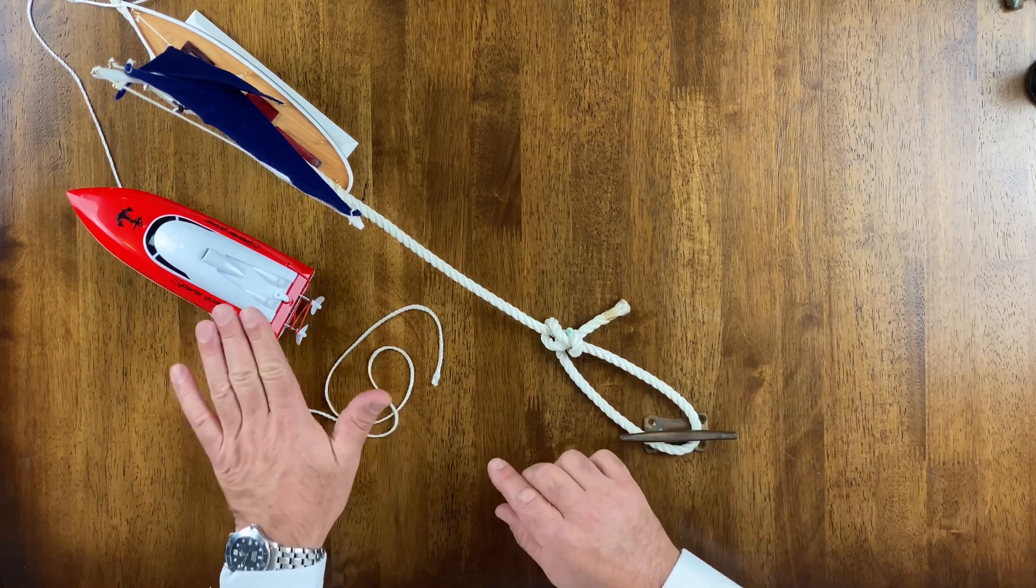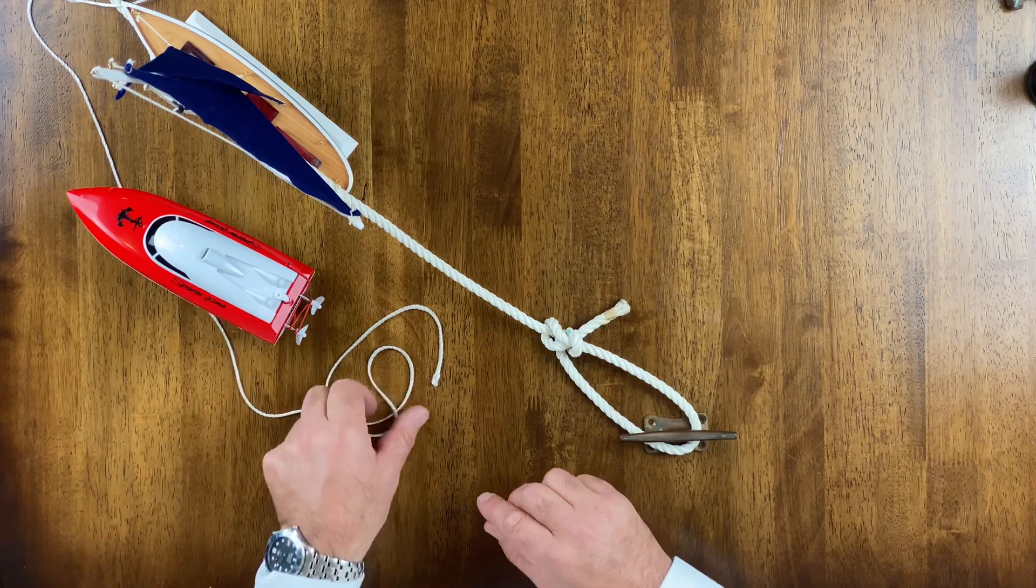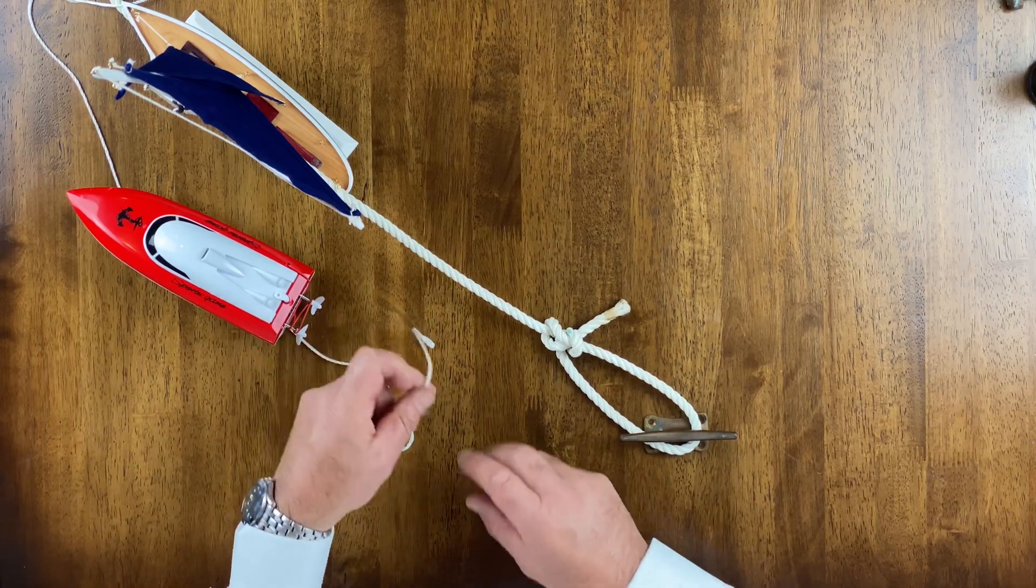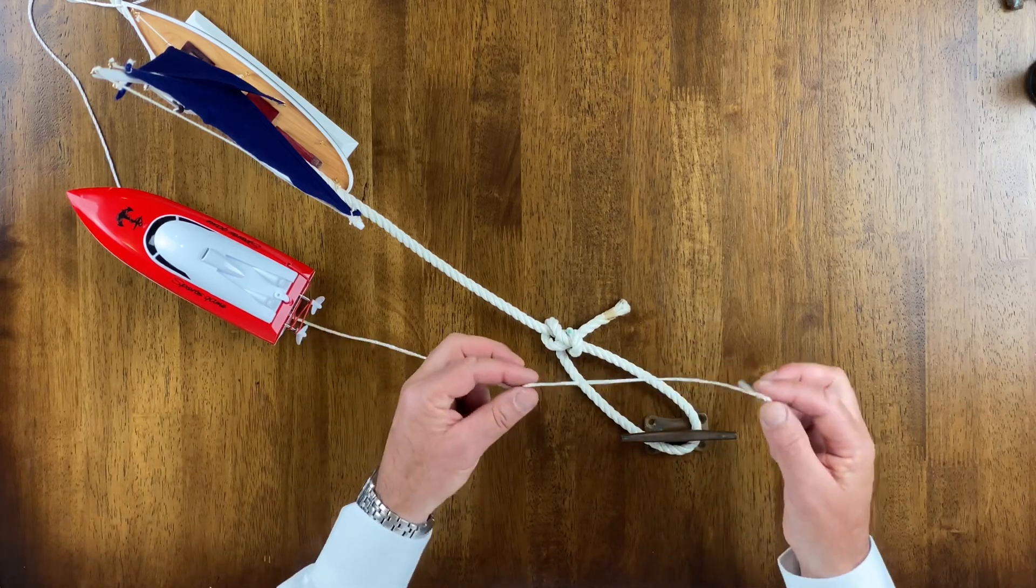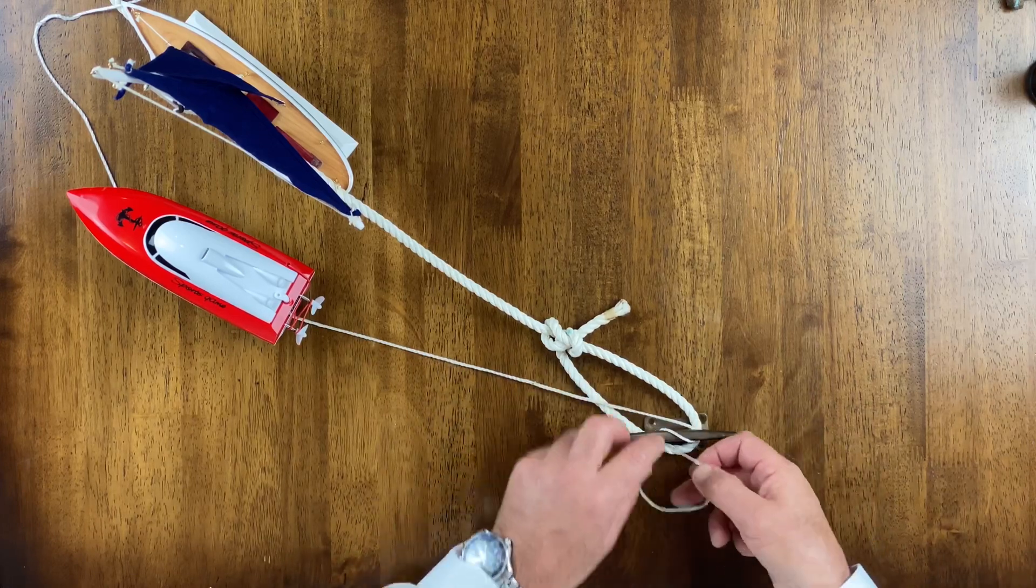This is our red boat, and he is about to come in and dock too. He's going to throw his stern line, and he's going to do what most people do - he's going to take his stern line ashore and do the whole wrap it around the cleat thing.